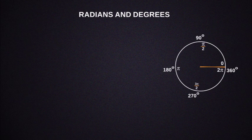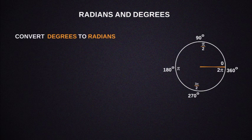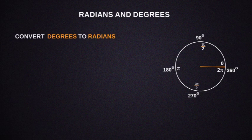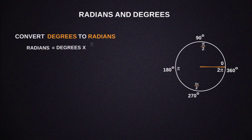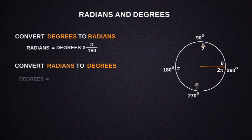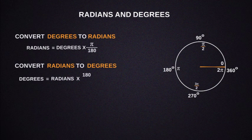Now let's look at the formulas for how to convert from degrees to radians and from radians to degrees. To convert degrees to radians: radians equals degrees times pi by 180. To convert radians to degrees: degrees equals radians times 180 by pi.